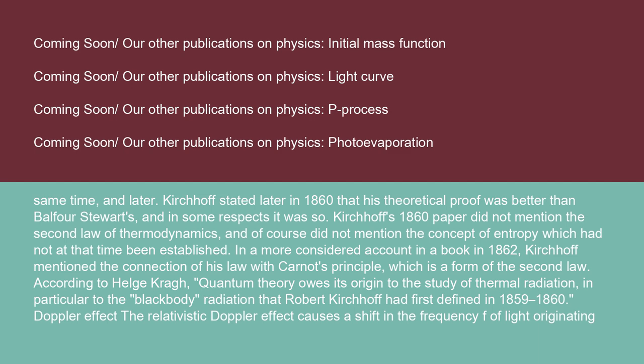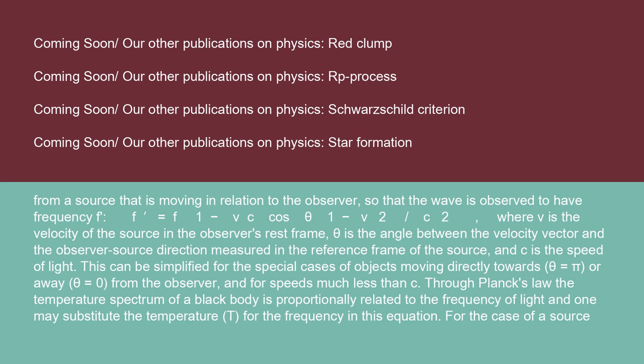Doppler effect: the relativistic Doppler effect causes a shift in the frequency f of light originating from a source that is moving in relation to the observer, so that the wave is observed to have frequency f' = f · (1 − v·cosθ/c) / √(1 − v²/c²), where v is the velocity of the source in the observer's rest frame, θ is the angle between the velocity vector and the observer-source direction measured in the reference frame of the source, and c is the speed of light. This can be simplified for the special cases of objects moving directly towards (θ = π) or away (θ = 0) from the observer, and for speeds much less than c.